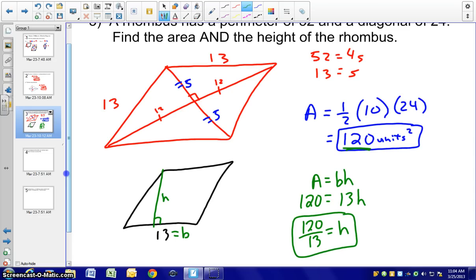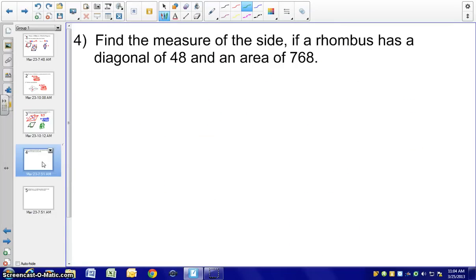So remember when you're dealing with a rhombus, you have two formulas that you can use to find the area and to go back and forth between finding the heights and the diagonals as well. Fourth example, find the measure of the side if a rhombus has a diagonal of 48 and has an area of 768. So let me go ahead and draw another rhombus and mark what we know. We have a diagonal of 48, and again, from our properties, we know that would make 24 and 24. We have the area of 768. We want to find the side.